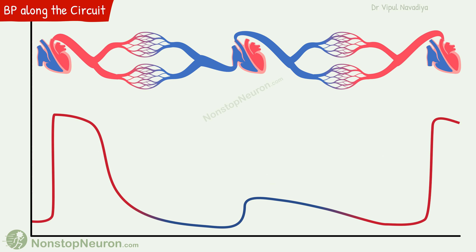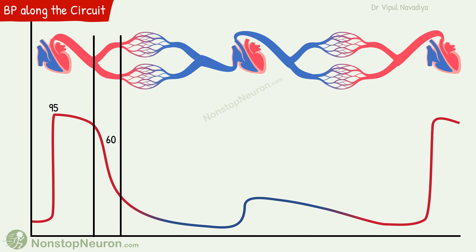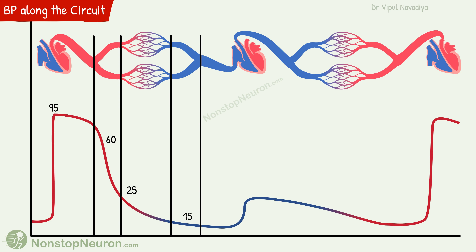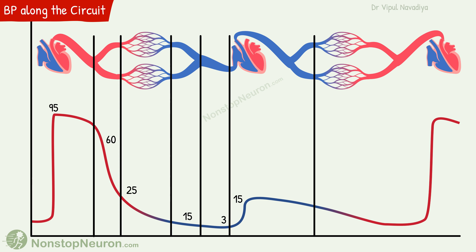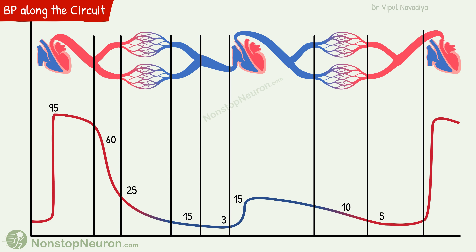Now let's see the same pressures in graphical form, since we will be using graphs a lot in our later discussion. In the systemic circulation, arteries have a pressure of about 95 mmHg. In arterioles, it drops to 60 mmHg. In capillaries, 25 mmHg. In venules, 15 mmHg. And in veins, 15 to 3 mmHg. Then we have the right heart, pumping blood to raise pressure to 15 mmHg in pulmonary arteries. In pulmonary capillaries, it drops to 10 mmHg, and then in pulmonary veins, to 5 mmHg.